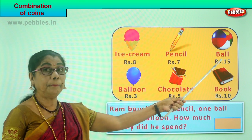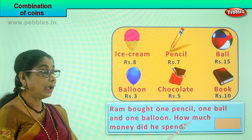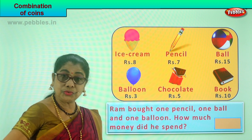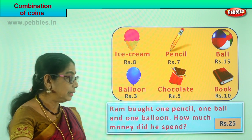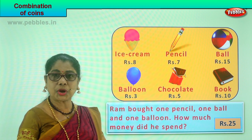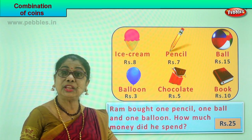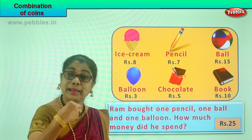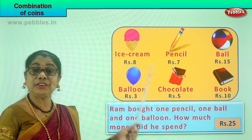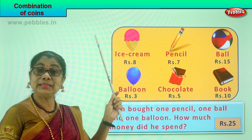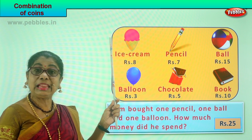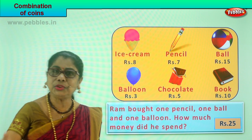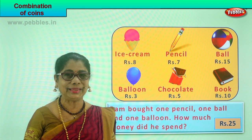Ram bought a pencil, a ball, and a balloon. He spent twenty-five rupees. He took out twenty-five rupees in coins, counted correctly, and gave it to the shopkeeper. He picked items from the shop and gave the correct coins. Did you enjoy shopping? Let's do one more!